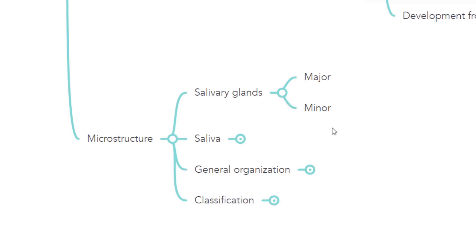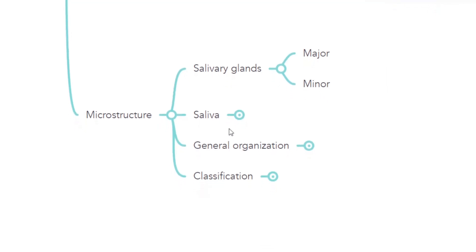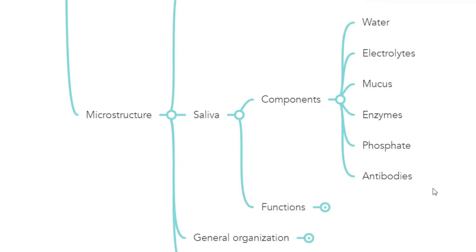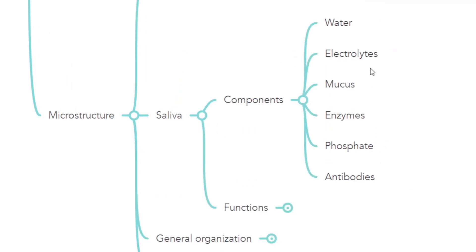The major salivary glands are the parotid, submandibular, and sublingual glands. The minor salivary glands include the palatal glands, lingual glands, palatine glands, palatoglossal glands, and von Ebner's glands in the tongue. Saliva includes water, electrolytes, mucus, enzymes, phosphate, and antibodies, which form its composition.